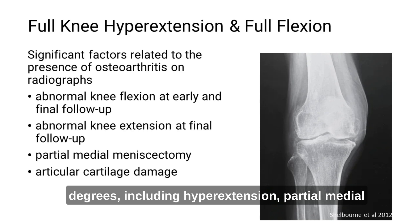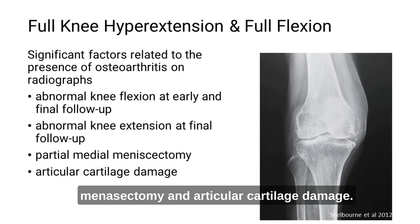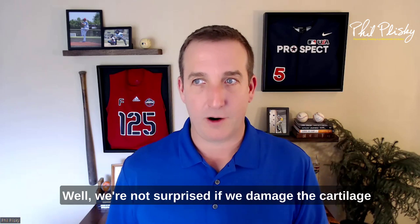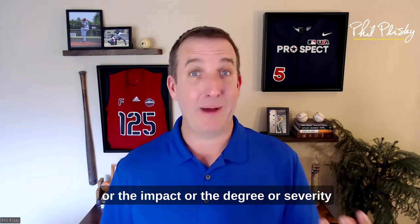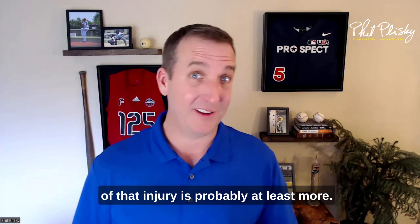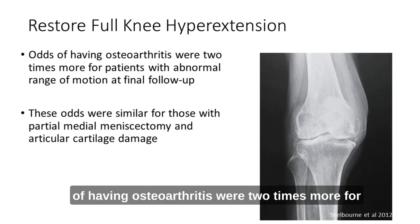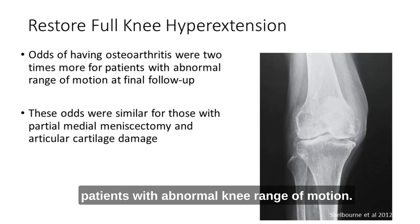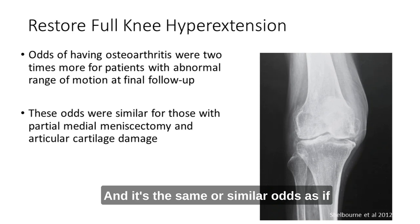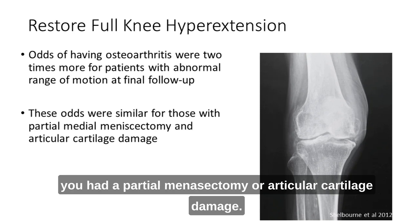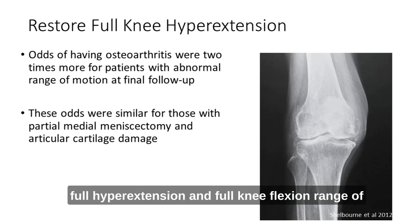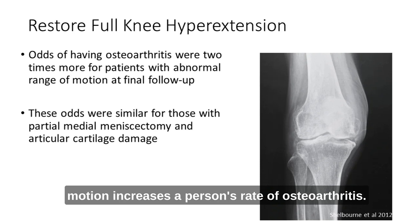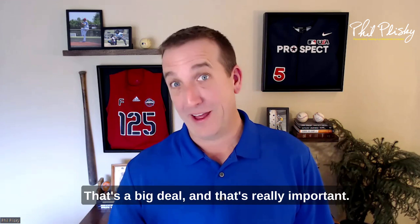Additional risk factors included lacking two degrees of hyperextension, partial medial meniscectomy, and articular cartilage damage. We're not surprised that cartilage or meniscus damage sets us up for increased osteoarthritis. But what I find really interesting is that the odds of having osteoarthritis were two times more for patients with abnormal knee range of motion — the same odds as having a partial meniscectomy or articular cartilage damage. This is saying that not having full hyperextension and full knee flexion range of motion increases a person's rate of osteoarthritis. That's huge — that's really important.